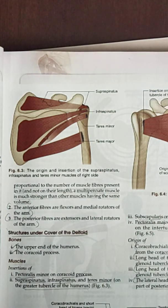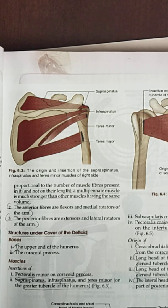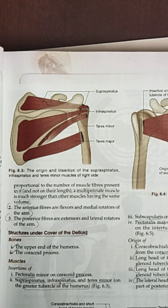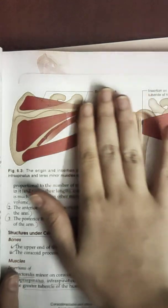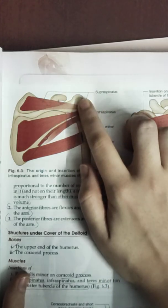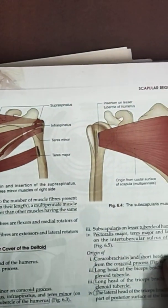If you remember the mnemonic 'the lady between two majors,' which denotes the attachments of the bicipital groove — the floor is latissimus dorsi, and on the sides are pectoralis major and teres major — we can remember that teres major is inserted into the bicipital groove, neither into the greater tubercle nor the lesser tubercle. The posterior-side muscles insert into the greater tubercle.